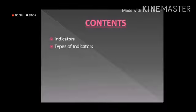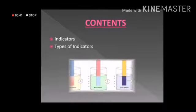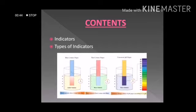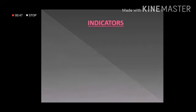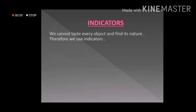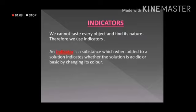And today we are going to study about indicators and the types of indicators in detail. Now, what are indicators? Can you recall — we discussed in the previous class that we should not touch the chemicals or taste them. So then how do we come to know that the given substance is an acid or a base? This is why we use indicators.